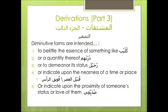At-Tasgheer — diminutive forms are intended to belittle the essence of something, like Kulaib, or a quantity thereof, like Durayhim, or to demean its status, as in Rujayl, or to indicate upon the nearness of a time or place, as in Qubayl al-Asr and Fuwayq al-Rats, or to indicate upon the proximity of someone's status or love to them, as in Sudayiqi.